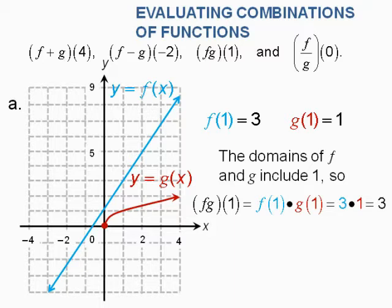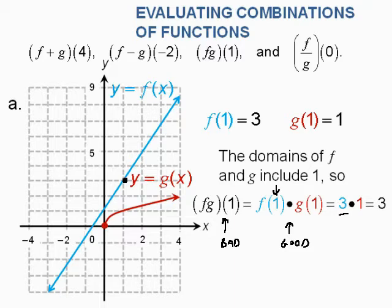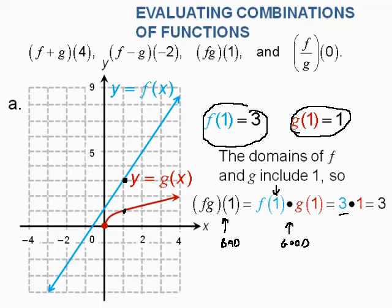Now let's evaluate f times g at 1. The good way to write it is f of 1 times g of 1. When x is 1 on the blue graph, y is 3, so f of 1 equals 3. g of 1 equals 1. So this is just 3 times 1, which equals 3. Graphically, not bad at all.